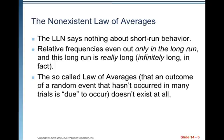The law of large numbers says nothing about short-run behavior. Relative frequencies even out only in the long run, and this long run is really, really long — infinitely long, in fact. The so-called law of averages — that an outcome of a random event that hasn't occurred in many trials is due to occur — doesn't exist at all.